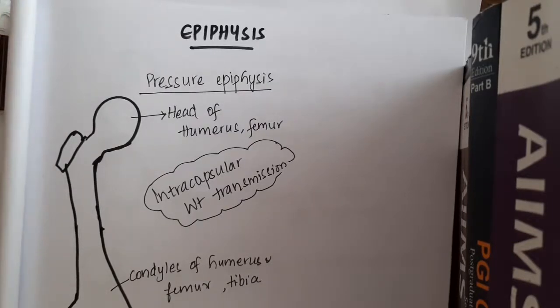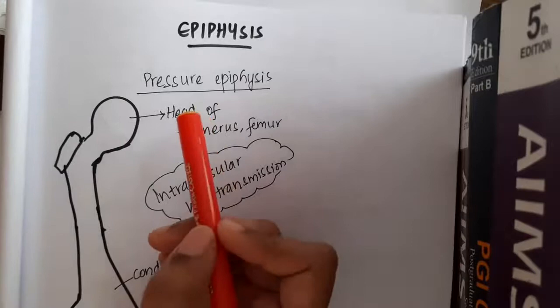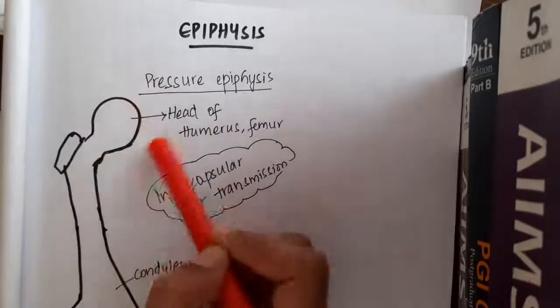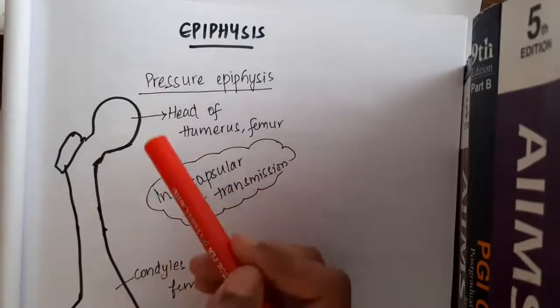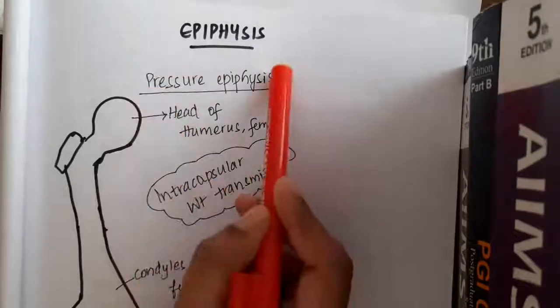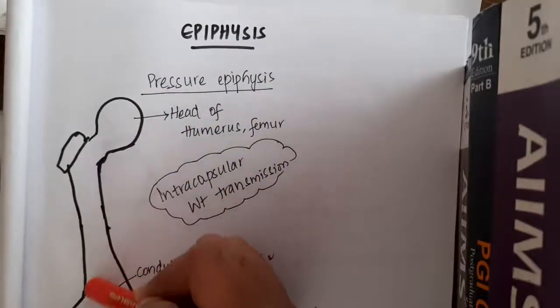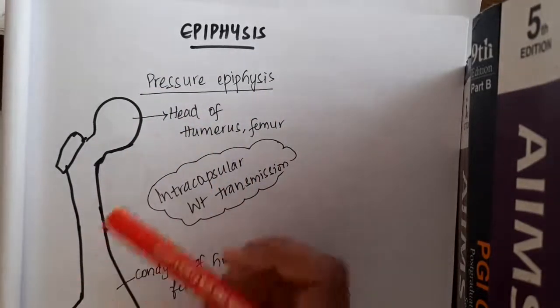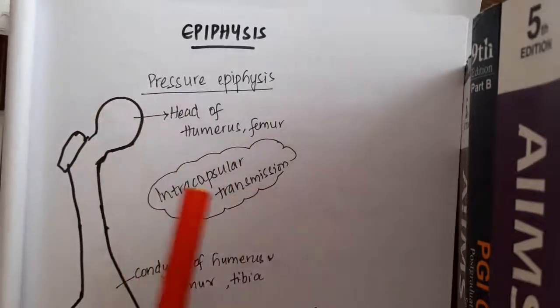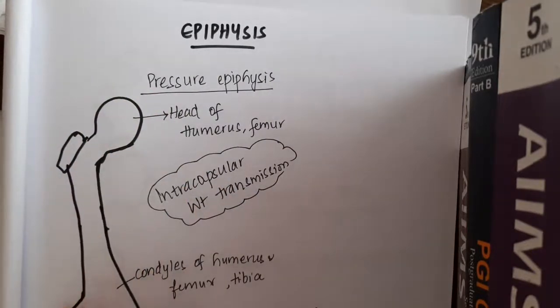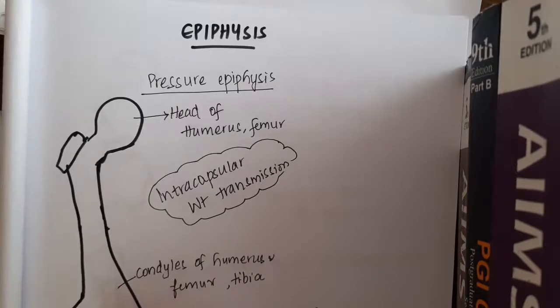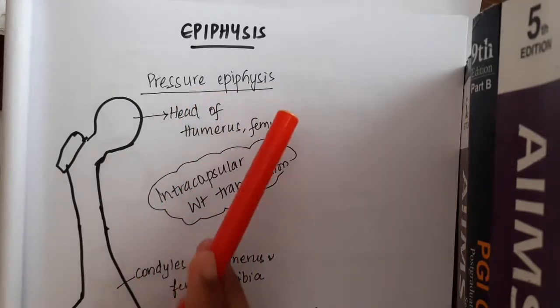The pressure epiphysis is intracapsular or it is articular. This pressure epiphysis will help in transmission of weight of the body. Head of the femur or humerus and condyles of the femur, humerus and tibia are the examples of pressure epiphysis.